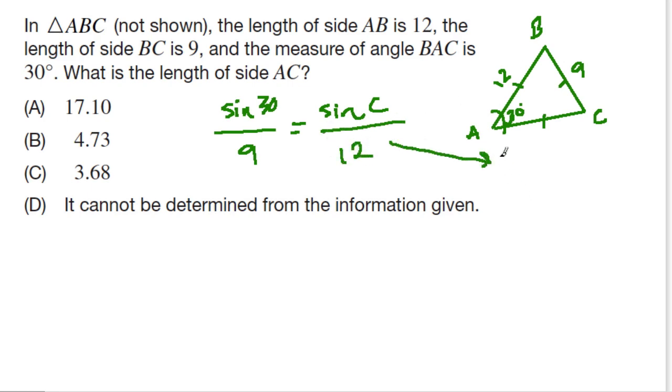And if we simplify this, we get 4 thirds sine of 30 equals the sine of C. What did I do there? I just multiplied both sides by 12. So you get 12 over 9 times the sine of 30 on the left-hand side, which is really just reduced to 4 thirds sine of 30.